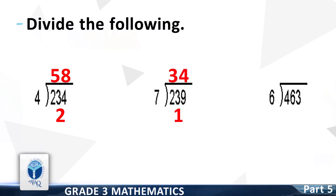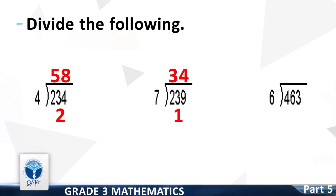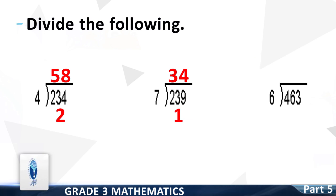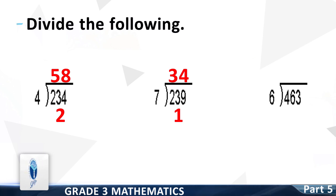Next question is 239 divided by 7. Good, the correct answer is: quotient 34, remainder 1.